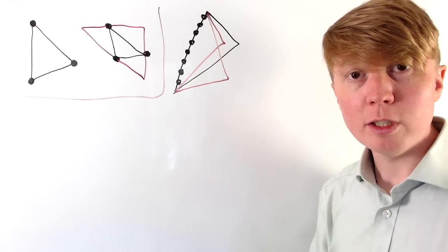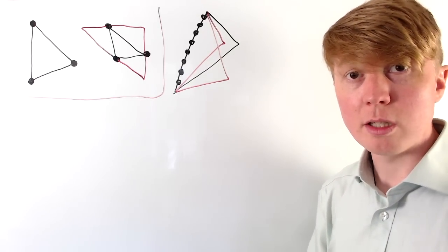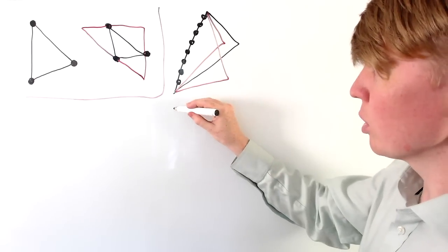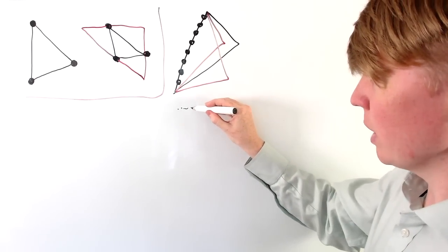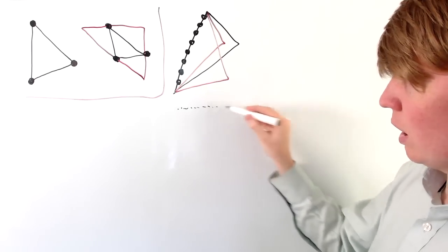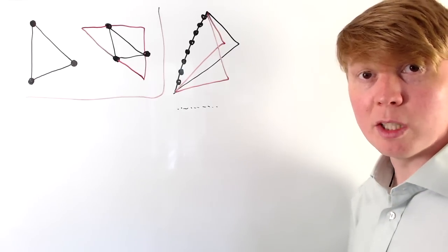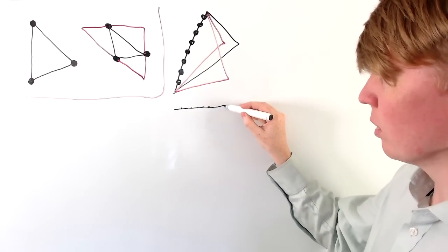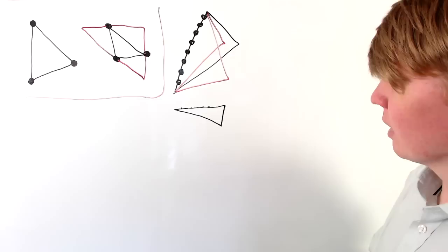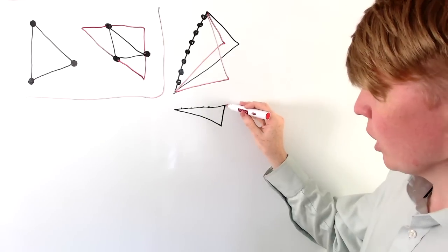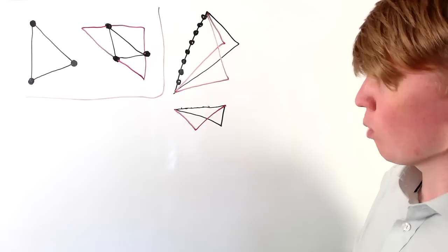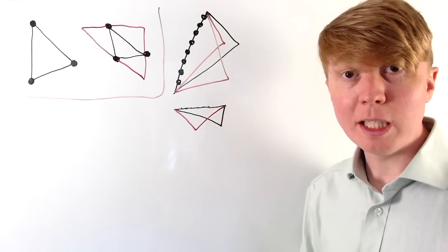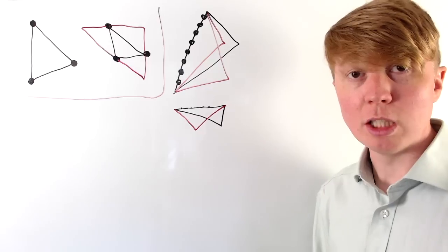In fact, even if we have infinitely many points, this still doesn't guarantee that we'll define a unique triangle, because we could have infinitely many points all contained within a line segment like this. We'd be in the same scenario as before — this is our edge, but there's nothing stopping us from having any combinations for the remaining two edges.